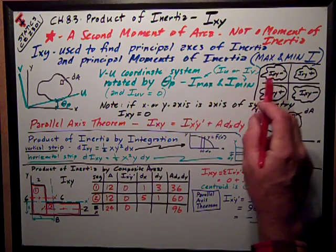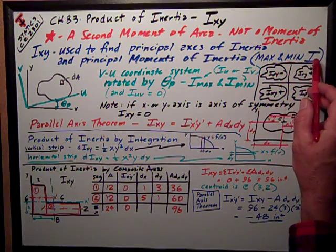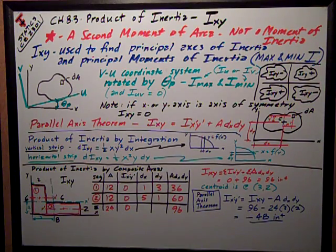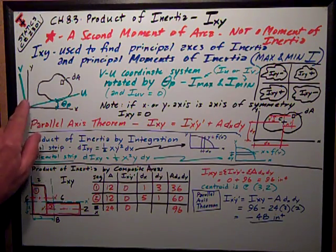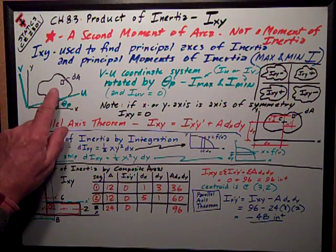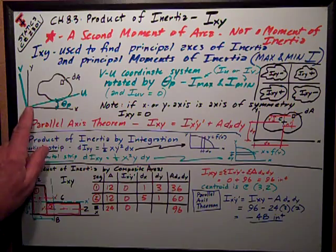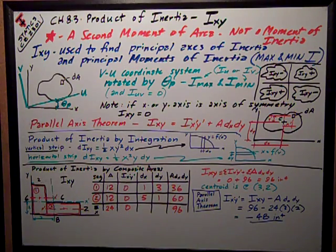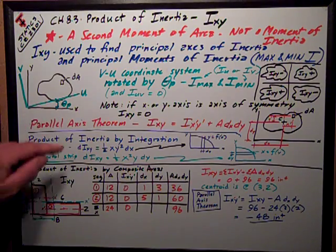Principal moments of inertia are the maximum and minimum I, or moment of inertia. Because if we have an area over here in this drawing, a blob about the X and Y coordinate system, and we figure moment of inertia about X and Y,